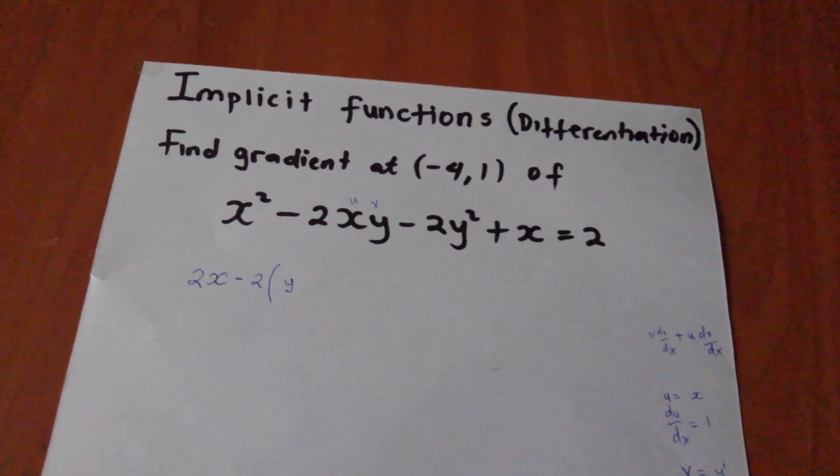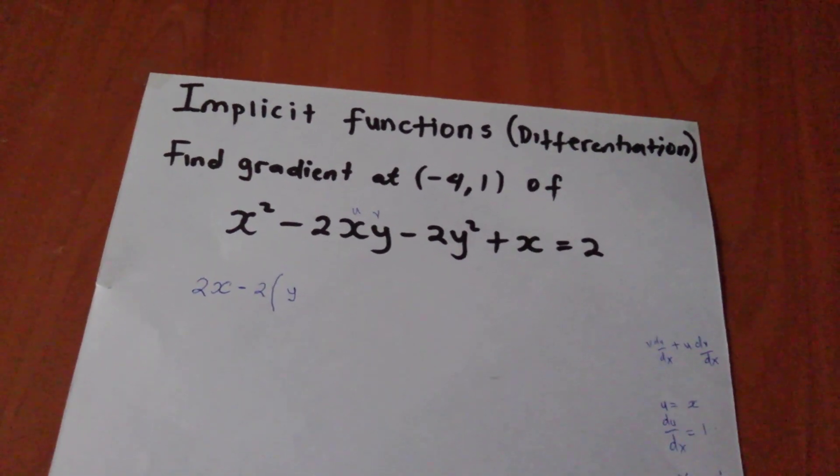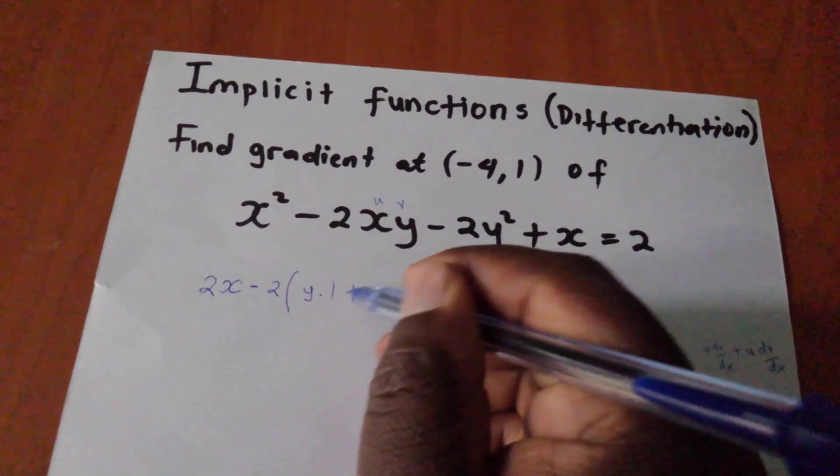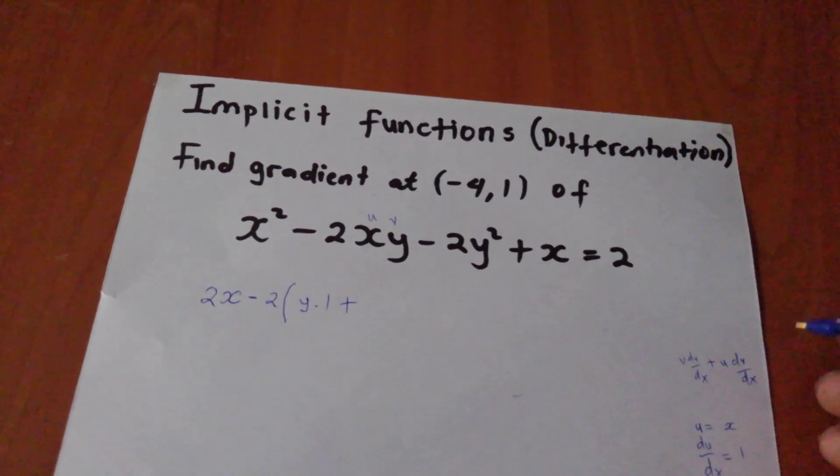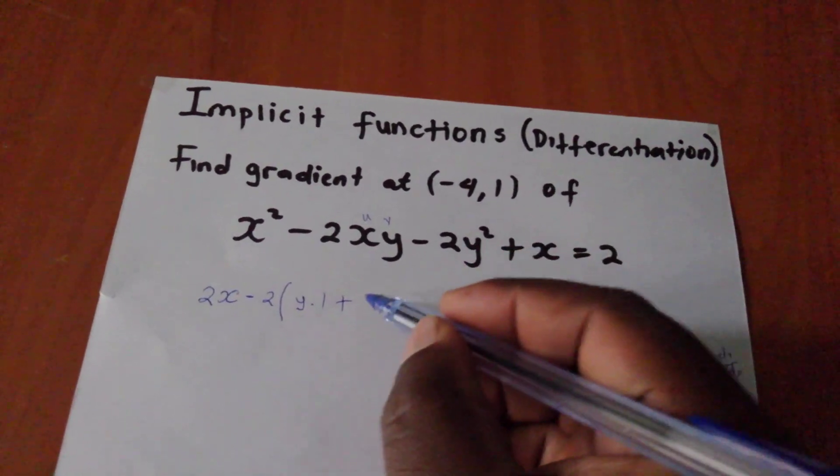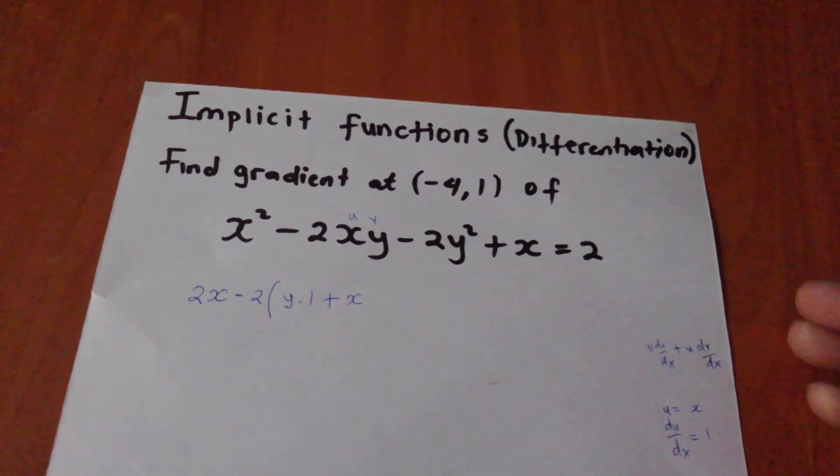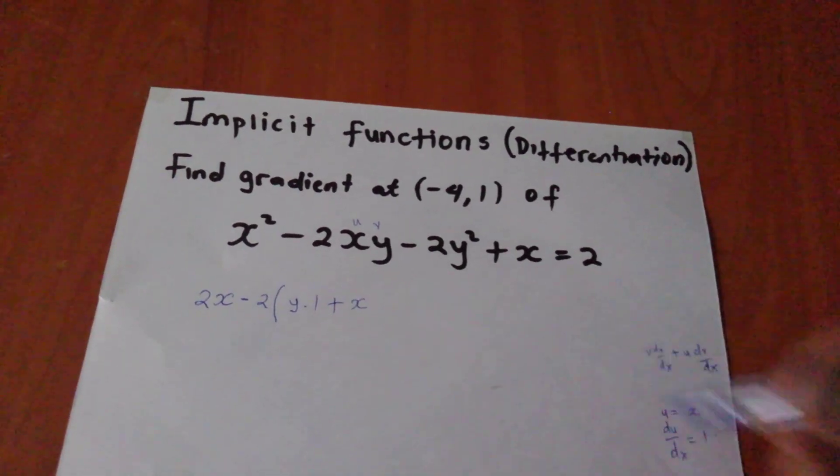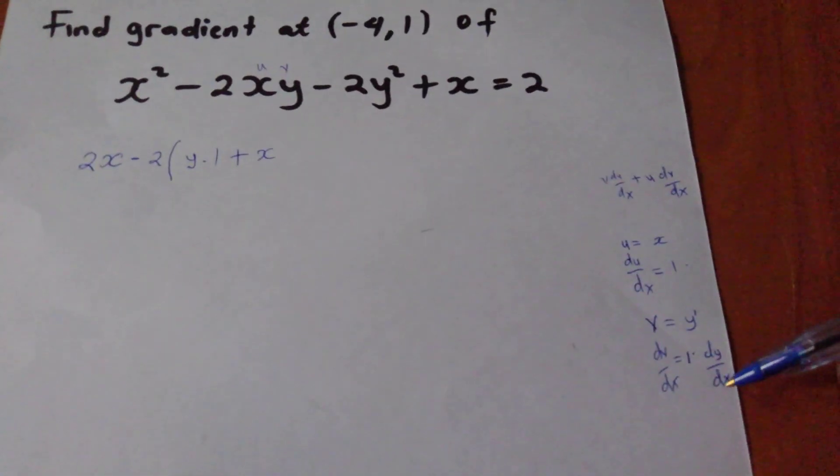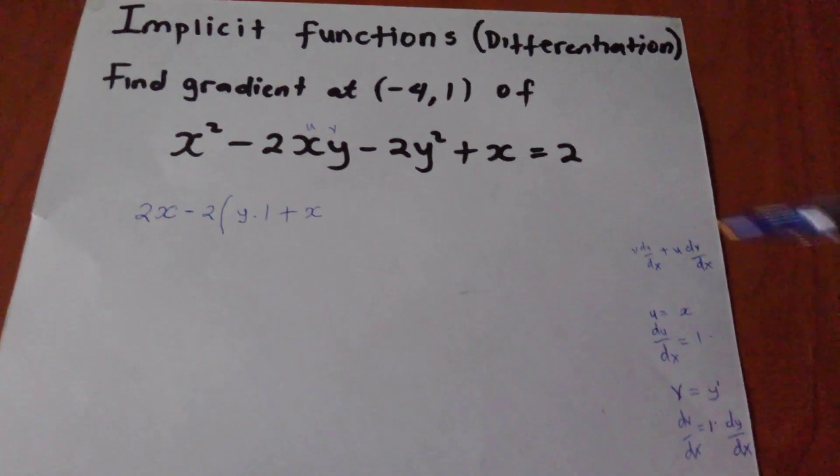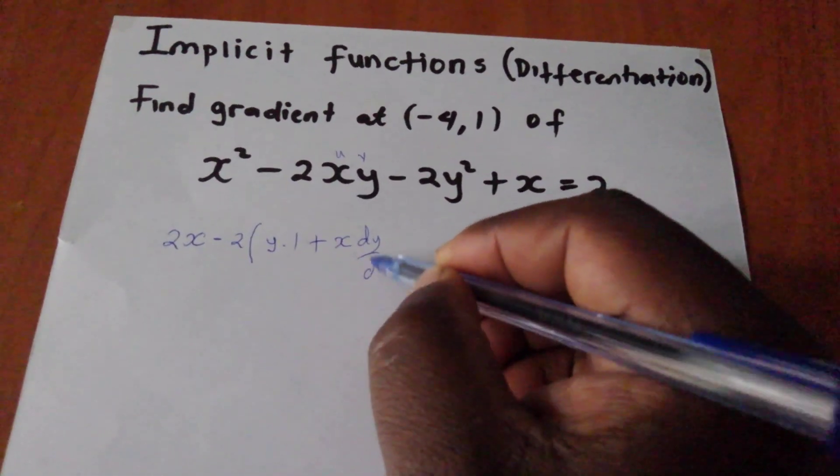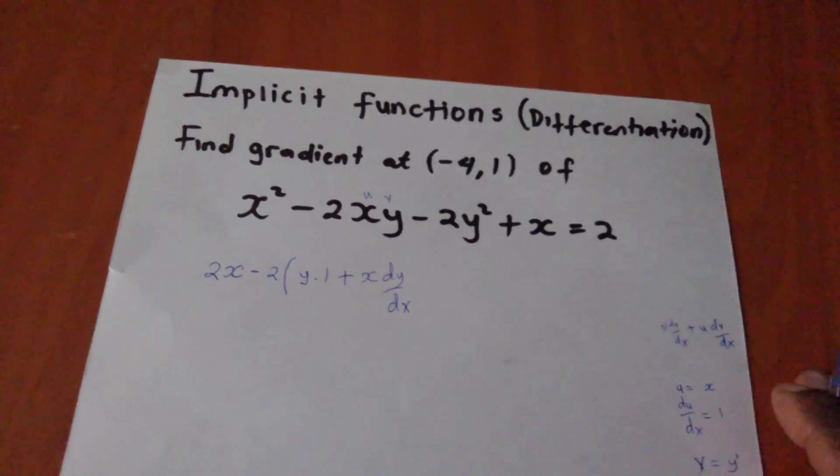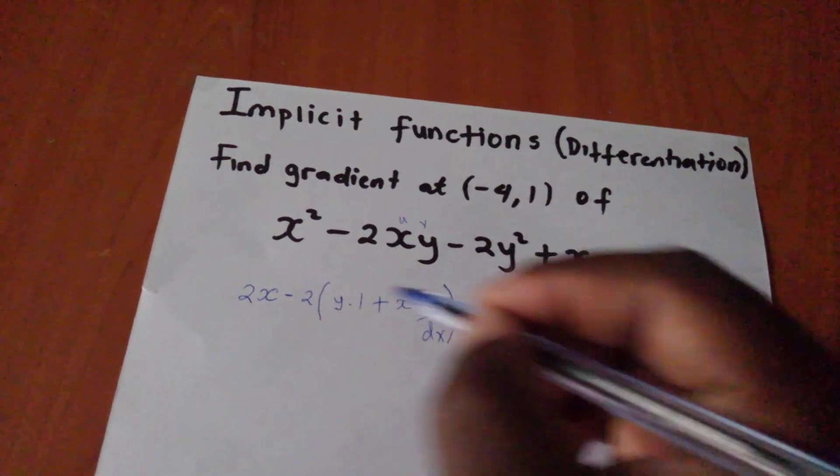And what is my du dx? My du dx was 1. So times 1. Plus, what is my u? My u was x. So what is my dv dx? My dv dx is this, 1 dy dx. So I have dy dx. I hope you are following. So this one is done. Close the brackets.